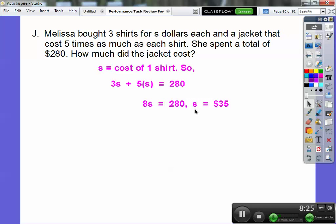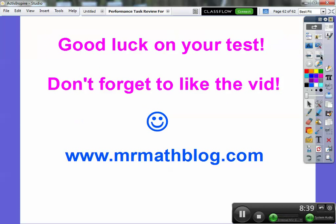Now let's answer the question. S is the cost of one shirt, which is $35. The question asks how much the jacket cost. We multiply 5 times s, which gives us $175. Good luck on your test, and don't forget to like the video.